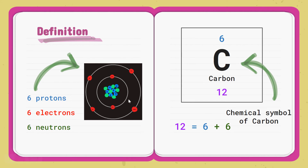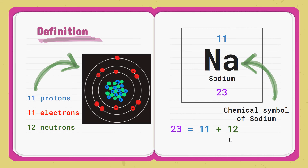The diagram from earlier is actually the atom of a carbon-12 atom. So 6 is the number of protons and 12 is the mass number. What is 12 consisting of? 6 is the proton, so 12 equals 6 plus 6. This is how we find the number of neutrons inside the carbon atom. Another example: to calculate the number of neutrons in sodium, we take the mass number minus the proton number — 23 minus 11 is 12. So there are 12 neutrons in the sodium atom.